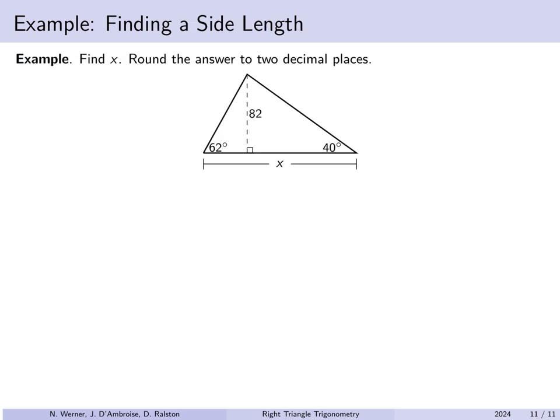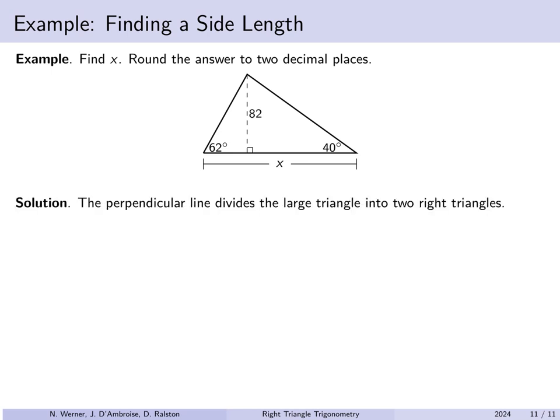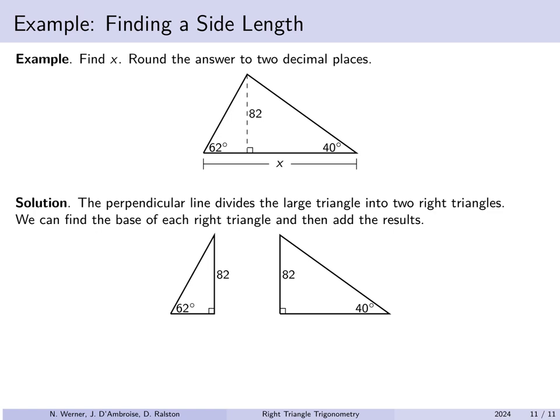Here is a diagram of a triangle that is not itself a right triangle, but we want to find x. If we draw an altitude from one vertex perpendicular to the opposite side, that altitude has a length of 82 units, creating two smaller right triangles. On the left is a right triangle with an angle of 62 degrees across from the altitude. On the right is another right triangle with an angle of 40 degrees across from that same altitude. We call the base of the left triangle x1 and the right one x2.